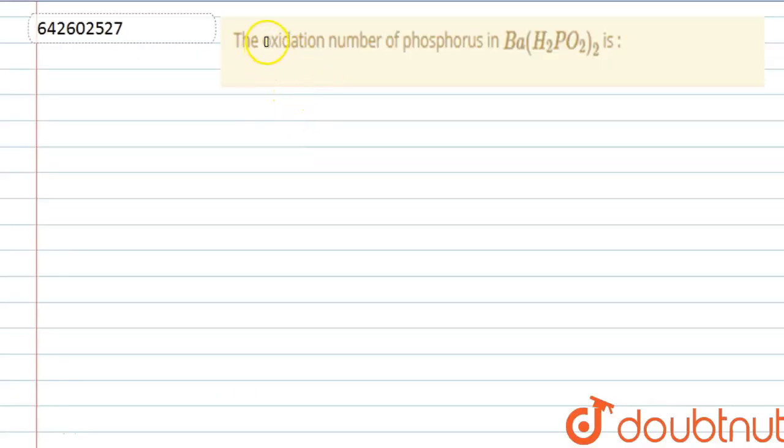The question asks for the oxidation number of phosphorus in the compound Ba(H2PO2)2. We are given a compound that is barium H2PO2 twice. This compound is made up of Ba2+ - this is an ionic compound - Ba2+ and H2PO2-.